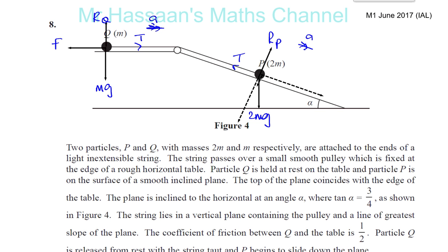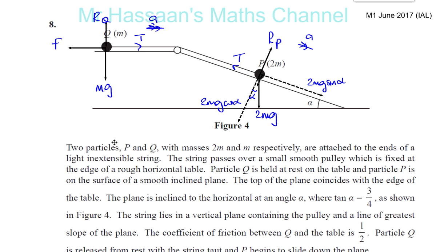The angle is alpha, so the angle here is alpha as well. The component of 2MG parallel to the plane - moving away from the angle - is sine, so this is 2MG times sine of alpha. The component perpendicular is 2MG times cosine of alpha. The inclined plane is smooth, so there's no friction acting on P. However, there is a frictional force on Q because the horizontal table is rough, and the coefficient of friction is one half.